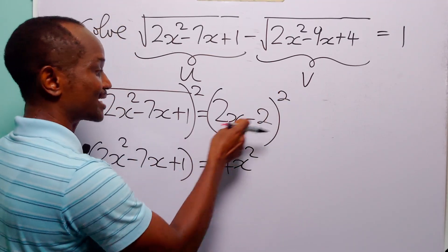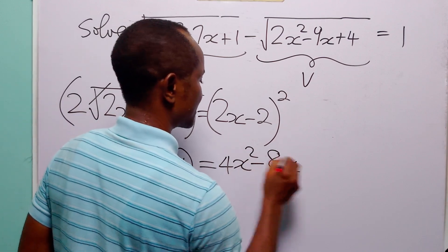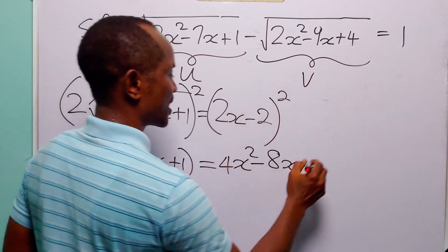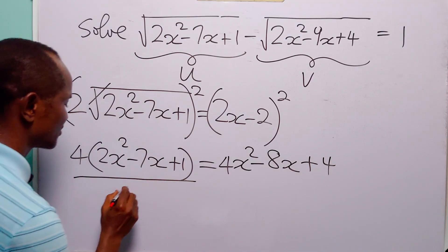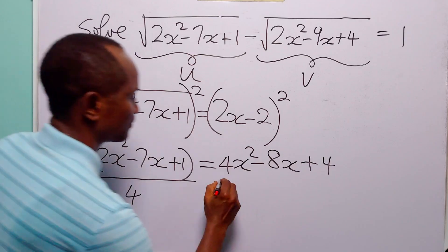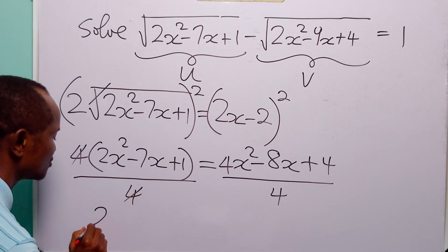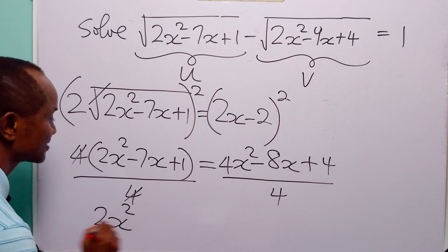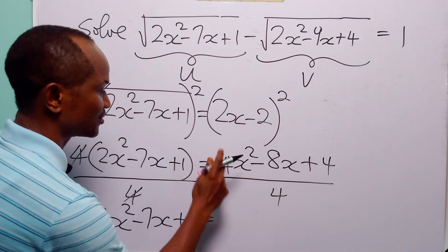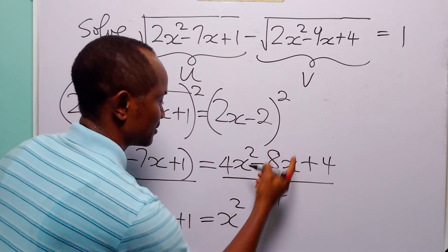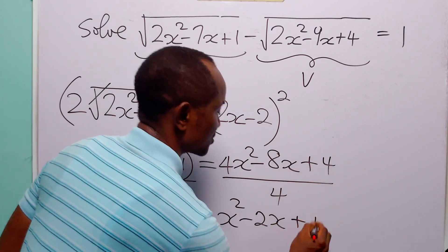We have 2 times 2x times minus 2, and of course that is minus 8x. Then we have minus 2 squared, which is plus 4. Now we can divide both sides of this equation by 4. And when we do that, we have that 2x squared minus 7x plus 1 is equal to x squared minus 2x plus 1.